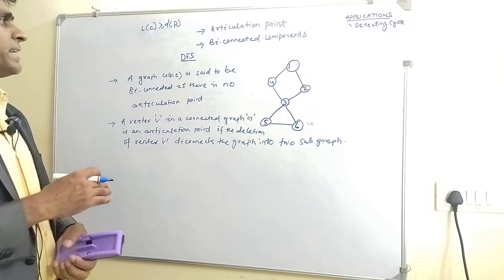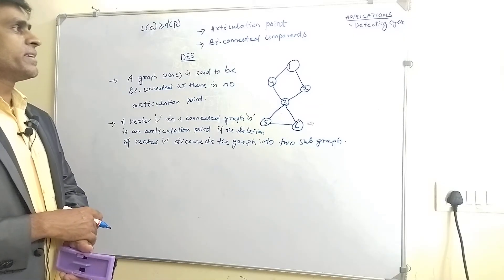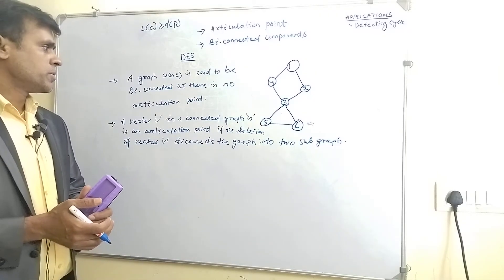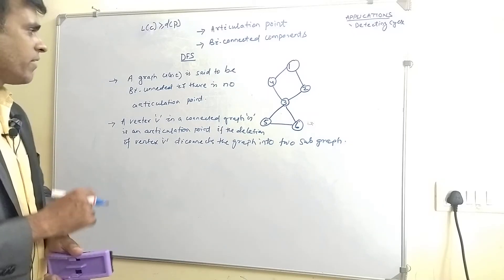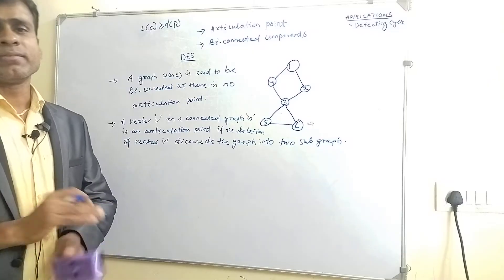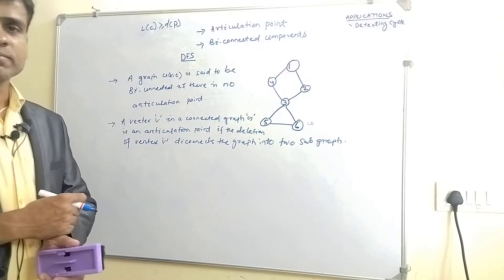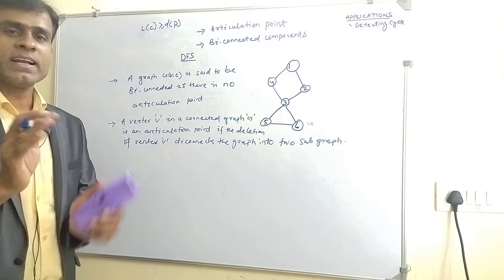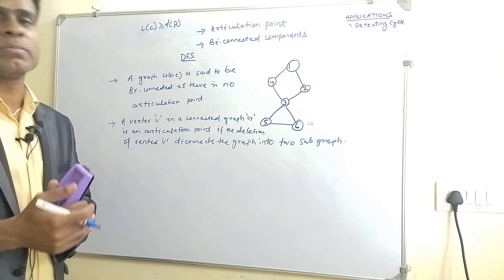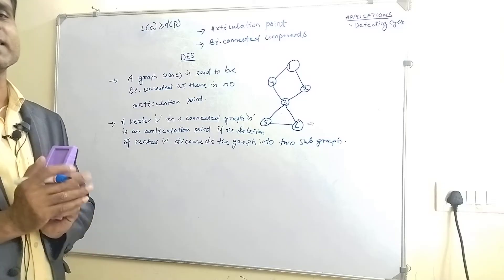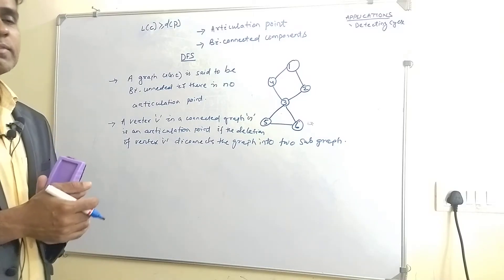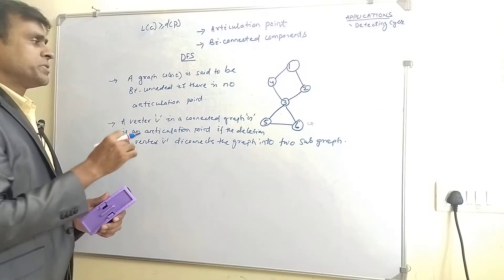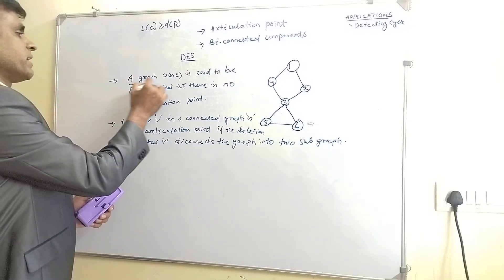Today we are going to discuss articulation points and biconnected components of a graph. A graph is said to be biconnected if there is no articulation point. So first we need to understand what an articulation point actually is. An articulation point is a vertex such that deleting that vertex divides the graph into two independent sub-graphs.